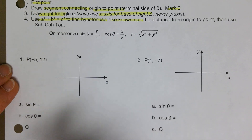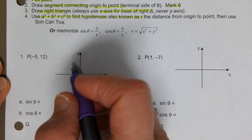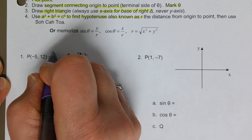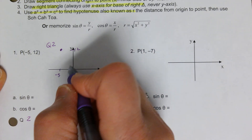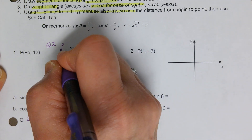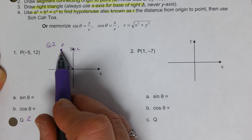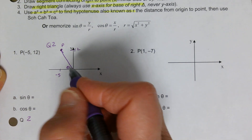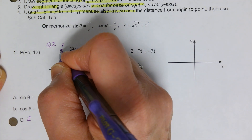Our first point P is (−5, 12). We want to find sine, cosine, and the quadrant of the terminal side. Plotting (−5, 12), we'd be in quadrant two. Connect the origin to the point — here's theta, always formed between our segment and the x-axis. Now draw the right triangle, dropping a perpendicular to the x-axis.